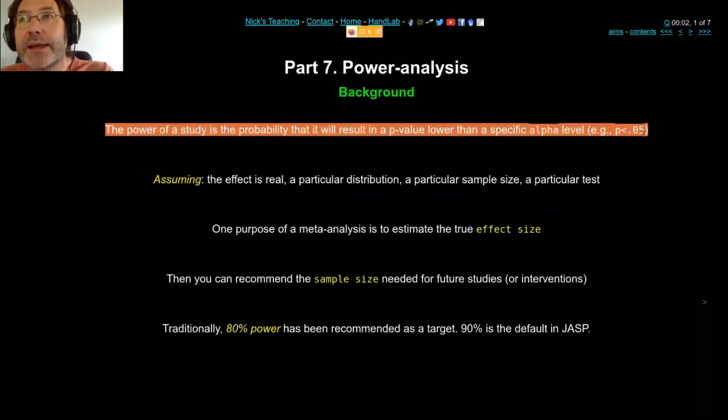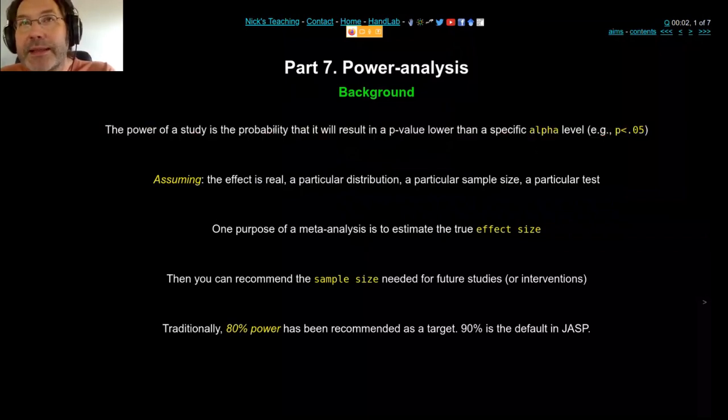So statistical power is, what's the probability that my next experiment will result in a p-value lower than the alpha level that I set? You normally have alpha as 0.05, but you may choose to change that. For example, if you're doing a really invasive intervention with someone, you want to be really sure that your intervention is going to work. You might well choose a lower p-value. So power is just that. What's the probability that my next experiment will be significant?